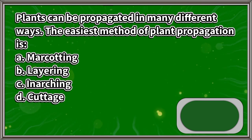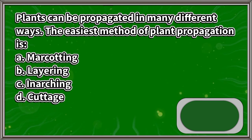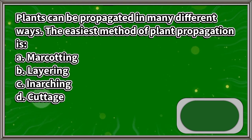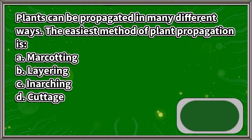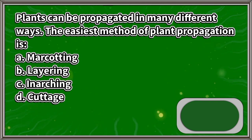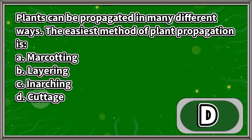Plants can be propagated in many different ways. The easiest method of plant propagation is: A. Marcotting, B. Layering, C. Anarching, D. Cutage. The answer is letter D.